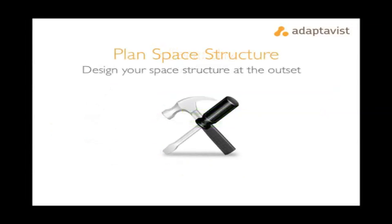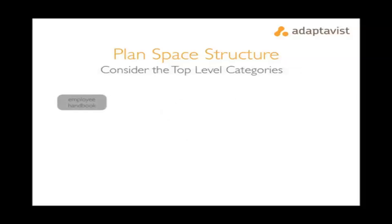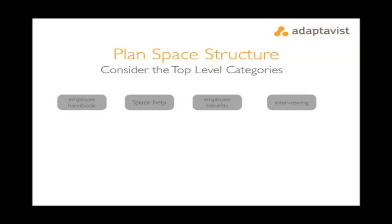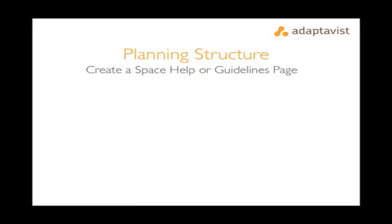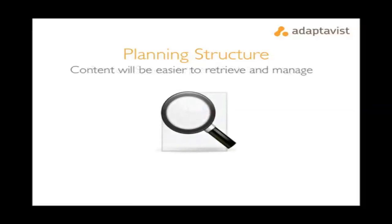When first adding content to your wiki, it's beneficial to spend some time considering how your space will be structured. Consider the top-level categories that will exist in your space and make them parent pages. Then make sure the space structure is conveyed to your team or department — a help page with instructions on how and where to add content would be a great way of doing this. This way you'll be able to maintain a structure that's easy to manage and helps you relocate information later.